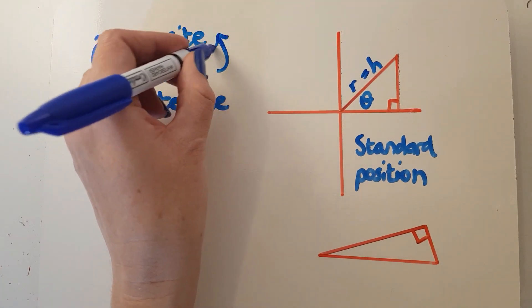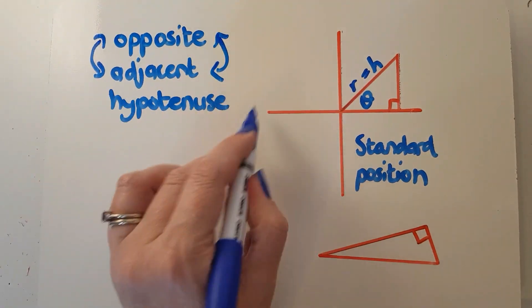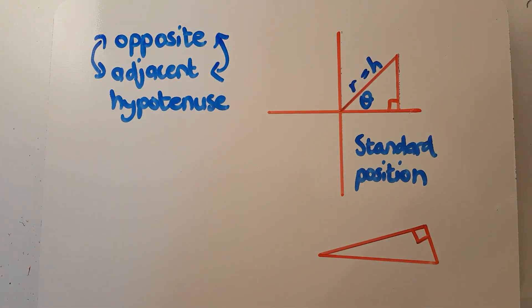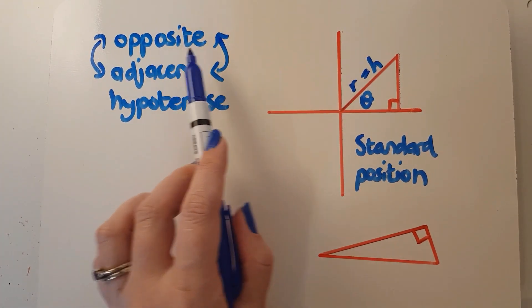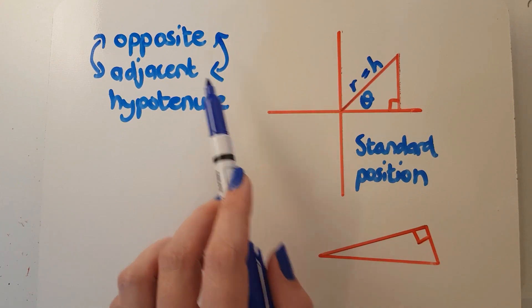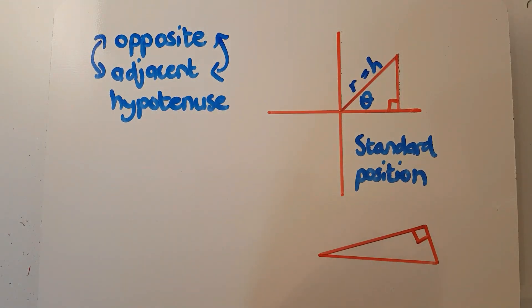I want you to understand that depending on where the triangle is in the space, your x and y are not necessarily always opposite and adjacent. And they can swap depending on where you've drawn your angle.